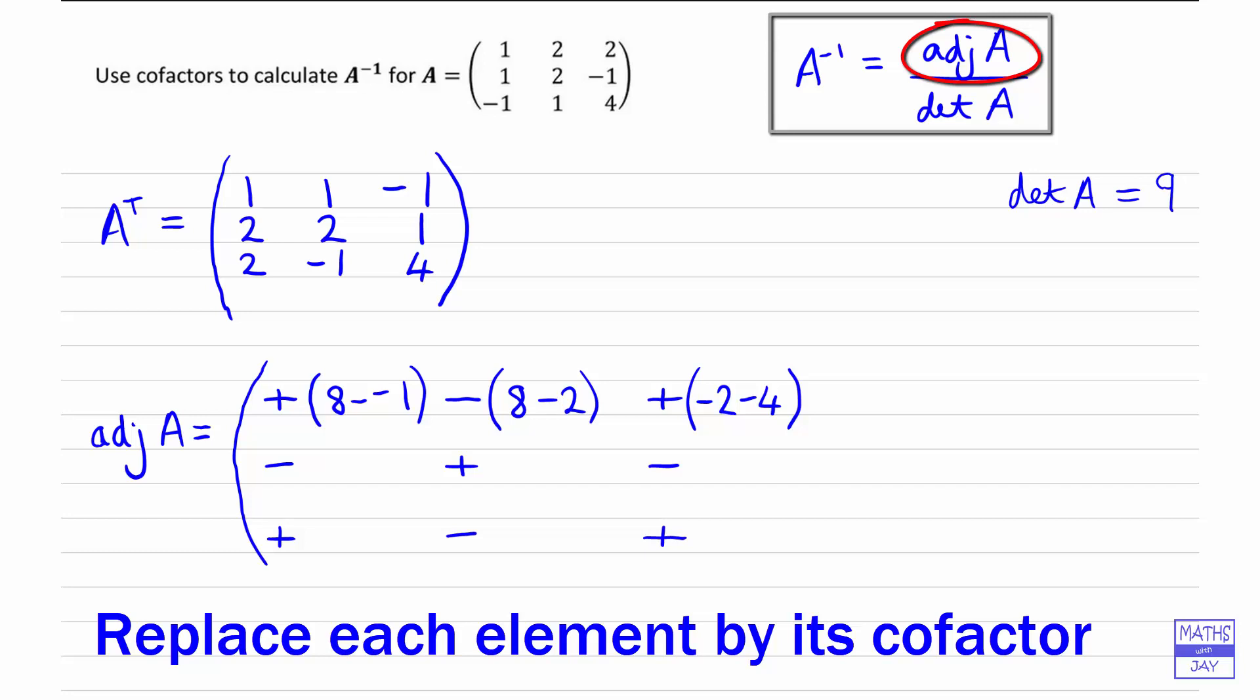So next one, we're looking at the first column, the second row. So there we're going to have 1 times 4 minus negative 1 times negative 1. So that's going to be 4 subtract 1. And then we've got 1 times 4 minus negative 2. So 4 minus negative 2. And then we've got 1 times negative 1 subtract 1 times 2. So negative 1 subtract 2.